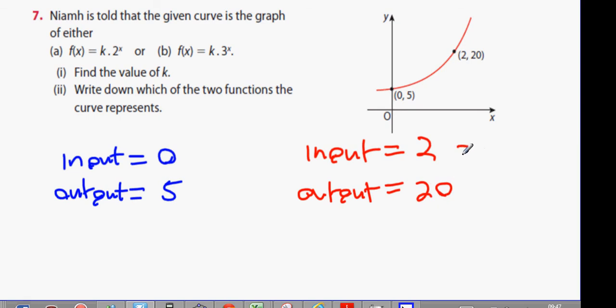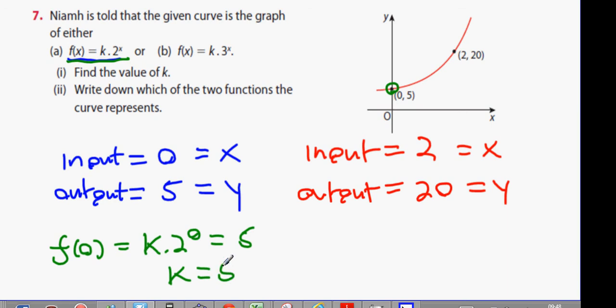So that means x equals 2, y equals 20, or x equals 0 and y equals 5. So let's see what happens here. I'll do it in green. f(x) equals k times 2 to the power of x. f(x) is going to be f(0). Why am I using f(0)? Because the input is 0. It's going to be k times 2 to the power of 0 equals what number? What value is f(0), guys? 5. k times 1 equals k. k equals 5.